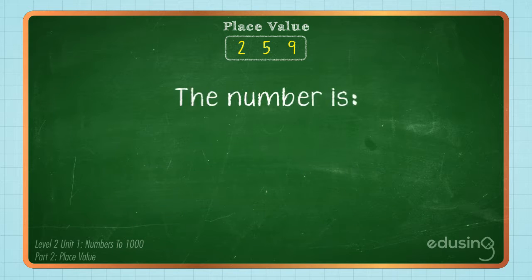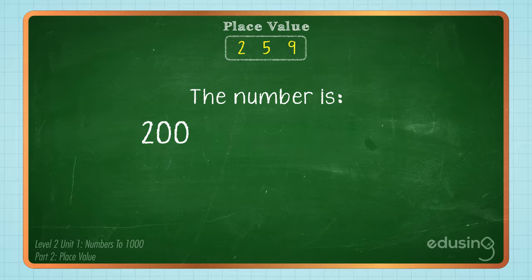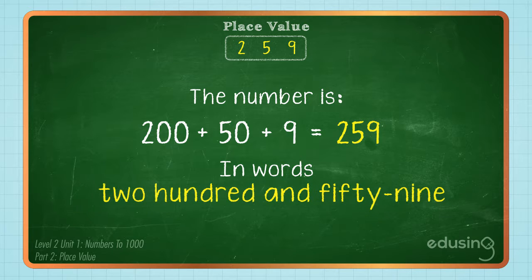So, the number is 200 plus 50 plus 9 equals 259.